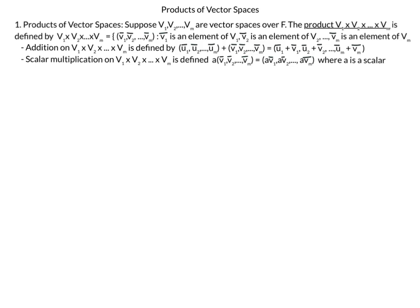If you've had set theory before, this is known as the cross product of a number of sets. Before examples, I also want to define addition and scalar multiplication on the product. Suppose we have m-tuple (U1, U2, ..., Um) and m-tuple (V1, V2, ..., Vm), both from the cross product. We add just as we would regular vectors: U1 to V1, U2 to V2, component by component, so Um plus Vm. We still have an m-tuple with each component added componentwise.